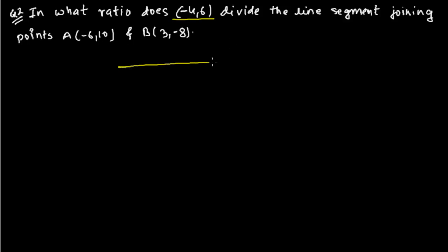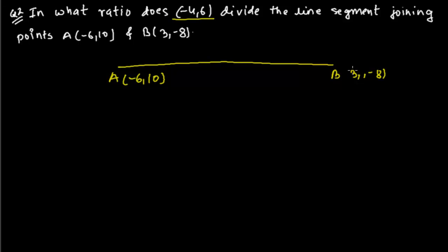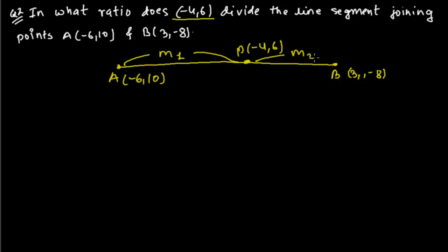Let me draw a rough line. So this is point A and this is point B. Let me write the coordinates: that is (-6, 10) and (3, -8). These are the two points joining the line A to B. Now somewhere here is a point whose coordinate is (-4, 6). This point is dividing the AB line in a certain ratio. Let me suppose it is M1 and M2 — this is the M1 part and this is the M2 part.